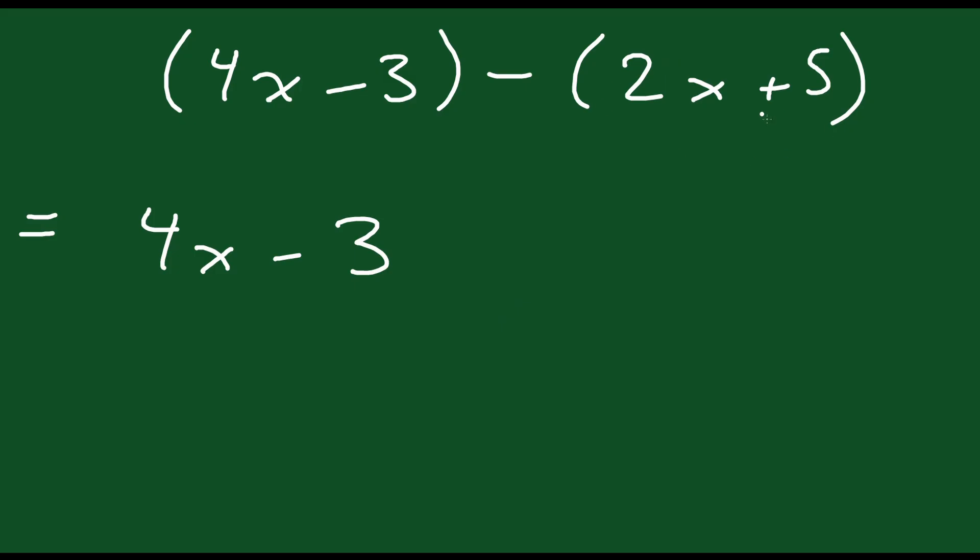But for the second binomial here because we're subtracting that entire binomial you have to think of it like we're subtracting the 2x and you're also subtracting the 5. So you're kind of distributing in that negative sign. So really what you have here is minus 2x minus 5. So when you get rid of those brackets you have to make sure that that negative is being applied to both of those terms.